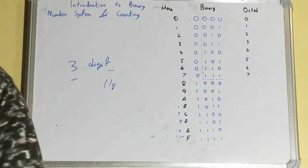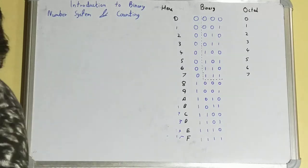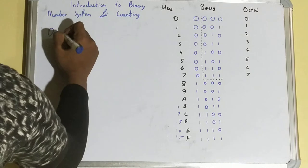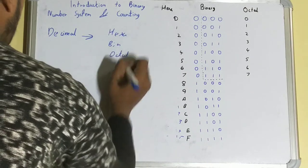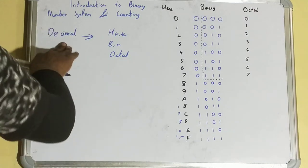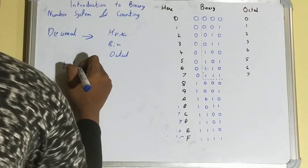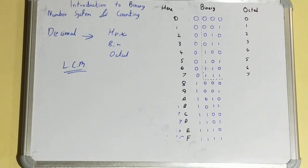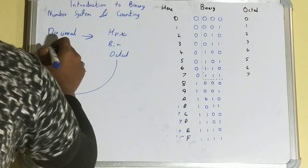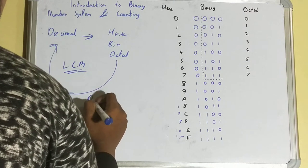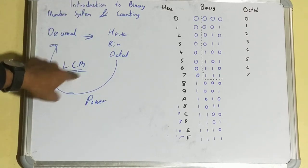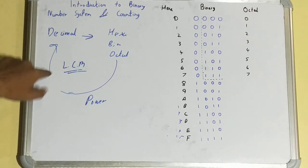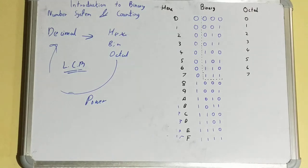Now, if you are given a decimal number and need to convert it into hexadecimal, binary, or octal — for converting from decimal to any of these, you use the LCM (repeated division) method. For the reverse conversion — from hexadecimal, binary, or octal back to decimal — you use the power method. I will show examples of both.